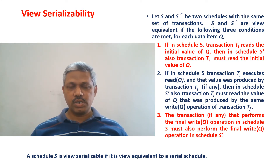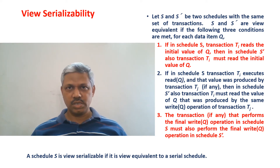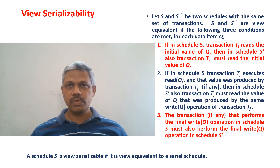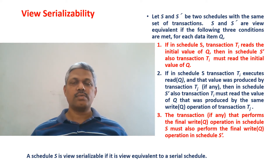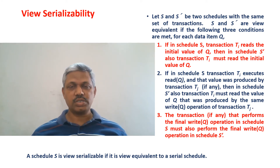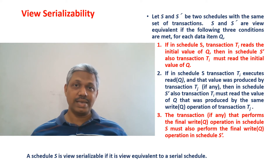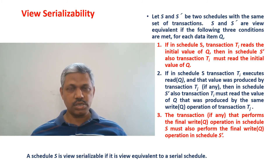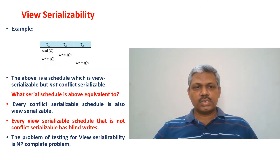To verify whether a given schedule is view serializable or not, we compare it with respect to a serial schedule S'. We verify whether S is view equivalent to S'. For all database objects involved in S and S', they should involve the same set of transactions, and for each database object we verify all three conditions. If S is view equivalent to a serial schedule, then S is a view serializable schedule — even though the operations of the transactions in S are interleaved, the end effect of S is the same as that of the serial schedule.